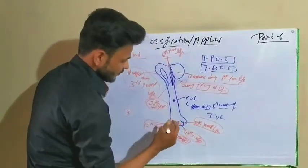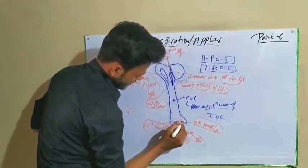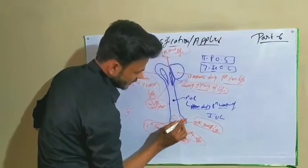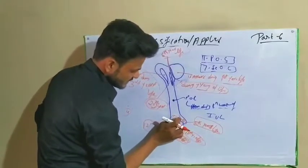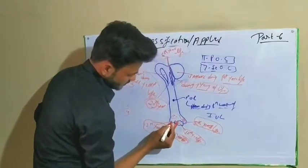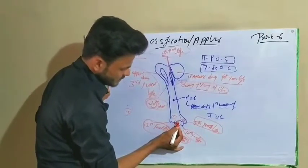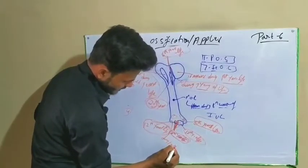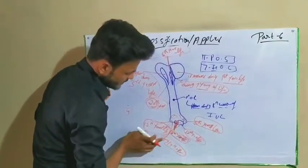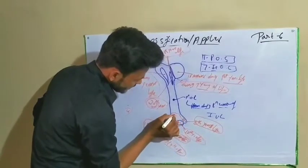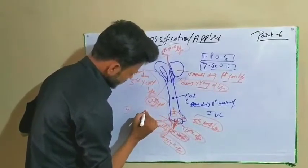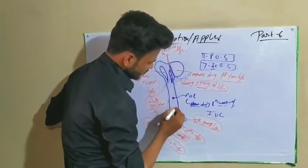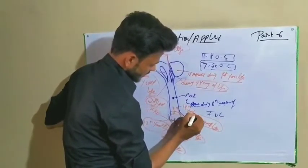These lower end centers form two epiphyses. The lateral epicondyle, capitulum, and trochlea fuse together to form one epiphysis during the 14th year of life. This epiphysis then fuses with the shaft during the 16th year of life. The medial epicondyle forms a separate epiphysis which fuses with the shaft during the 18th year of life.